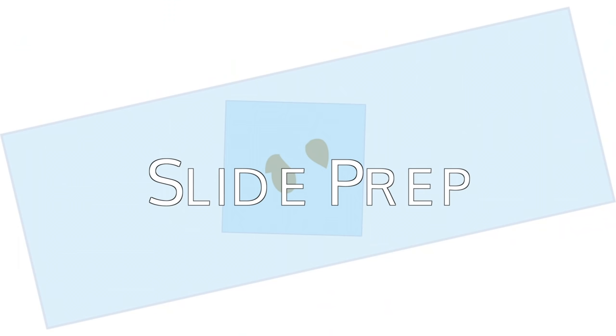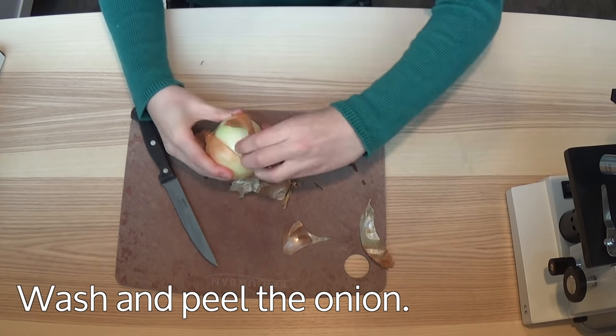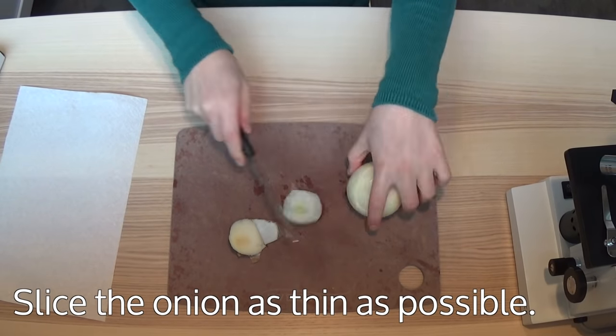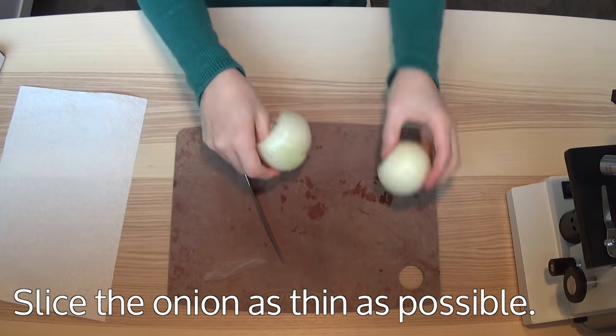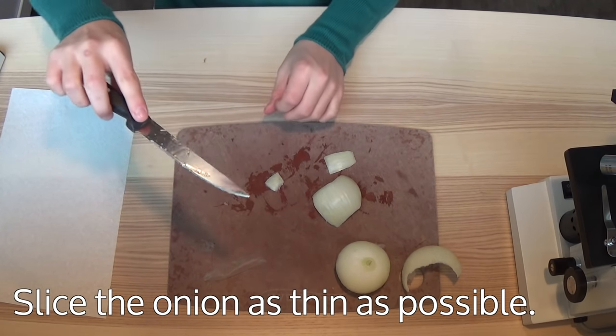Preparing the slides. First, wash and peel the onion. Then, slice the onion as thin as possible. I found that using the thin layer of skin around the onion worked best.